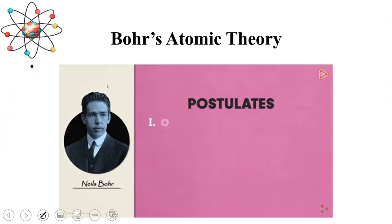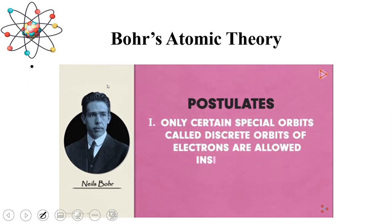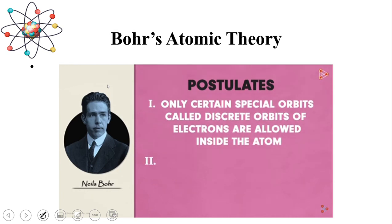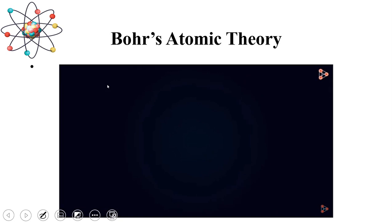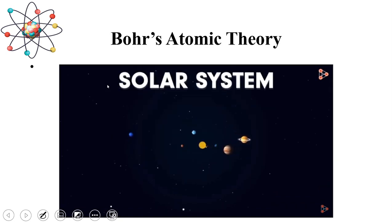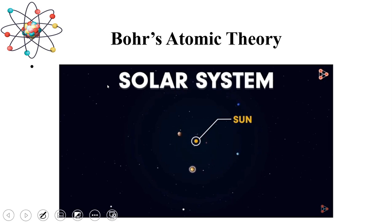Bohr said that there are certain special orbits in which electrons revolve, and when they revolve in those orbits they do not emit any energy. He compared atomic structure with the solar system — the sun is the nucleus and the planets are the electrons. Every planet moves in a special fixed path, and it has never happened that a planet falls by releasing energy. They continuously move in a specific path.